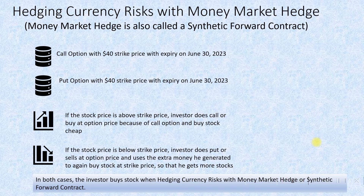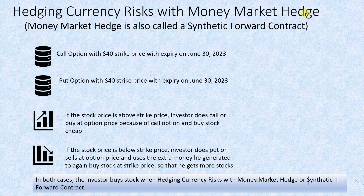There is also a net optimum premium that a money market hedge investor needs to pay the seller, which is a premium to compensate for the seller's obligation upon the buyer's or investor's right to sell or buy the option. This hedging approach is also referred to as a synthetic forward contract.